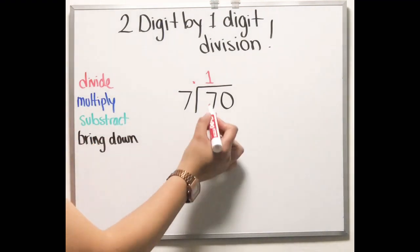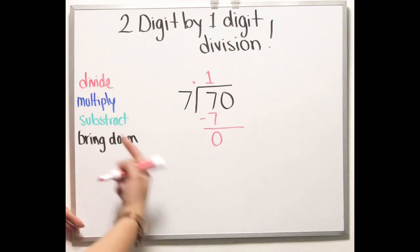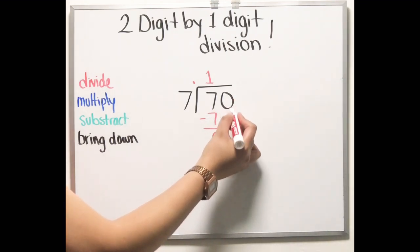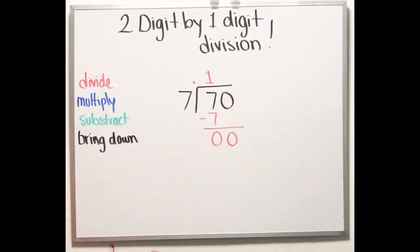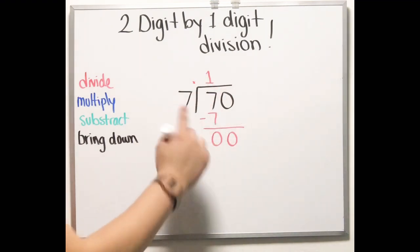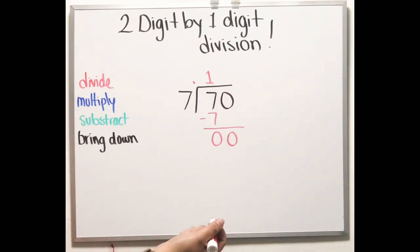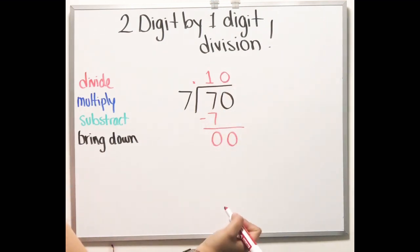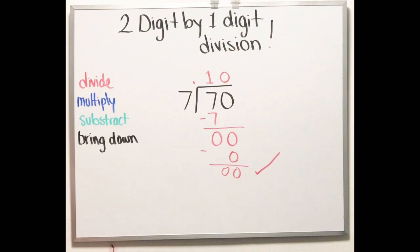Now you subtract: 7 minus 7 gives you zero. Next, bring down the next number — bring it down right here. Then think: how many times can 7 go into zero? Any number multiplied times zero gives you zero, so 7 times 0 gives you zero. That means this one is correct.